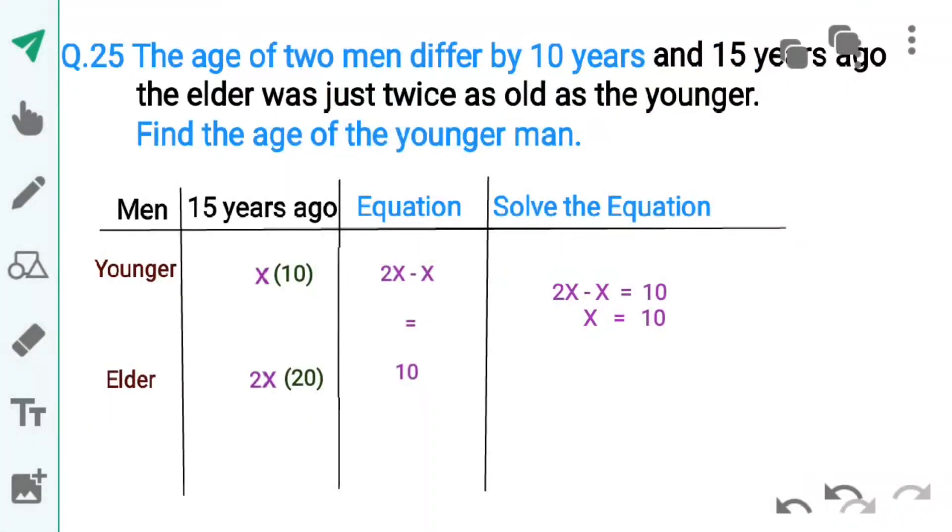Students, ab equation solve karengge. 2x aur x minus karengge toh ayega x equals to 10, jo younger ki 15 years ago ki age hogi. Elder ki age nikalne ke liye 10 ko 2 se multiply karne par age aayegi 20.